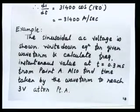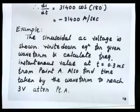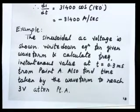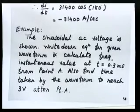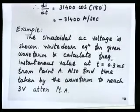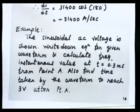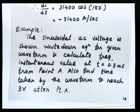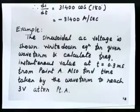The data for the next example: a sinusoidal AC voltage waveform is shown. Write down the equation for the given waveform, calculate the frequency, find the instantaneous value at t = 0.3 millisecond from point A, and also find the time taken by the waveform to reach 3 volt after point A.